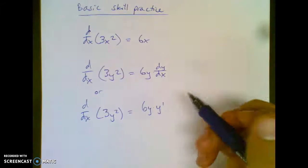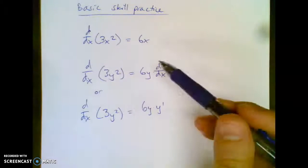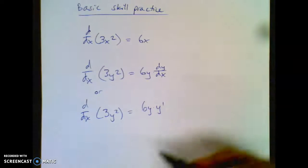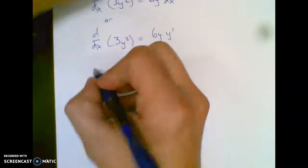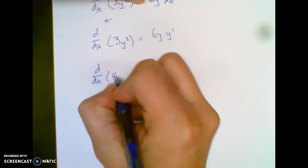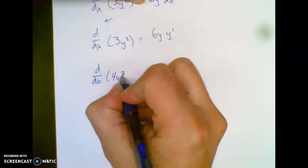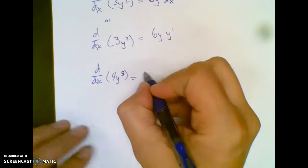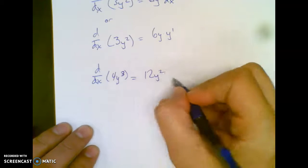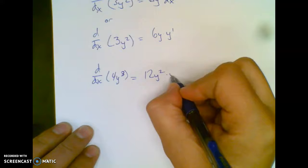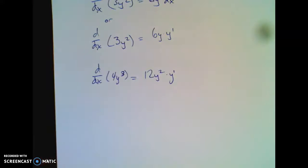So both those ways are okay. But I wanted to show you, they are pretty much exactly the same. So moving on to more, what if you had the derivative of 4y³? 4y³ would be 12y² and a penalty. I'm going to do the y prime one because it's quicker to write.